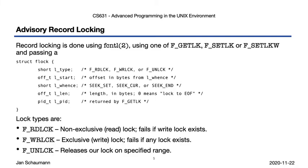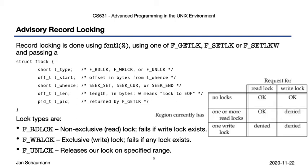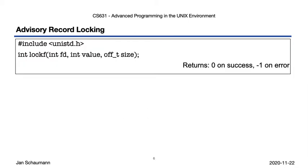The struct flock uses the offset and whence semantics we're familiar with from our discussion of the lseek call. The lock type is either a read lock, a write lock, or we can unlock. How shared or exclusive locks are combined is shown here. We also get the lockf library function — not to be confused with the flock system call — which locks a region of the file referenced by the file descriptor starting at the current offset and of the specified size. The options are unsurprising and self-explanatory, although we have explicit options for non-blocking tests.